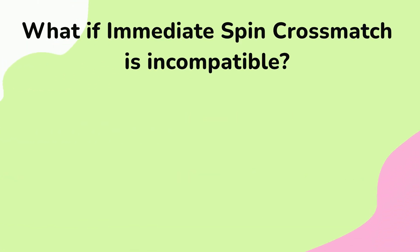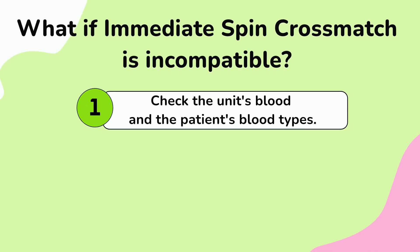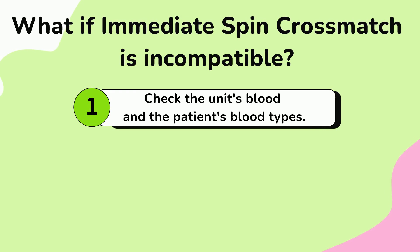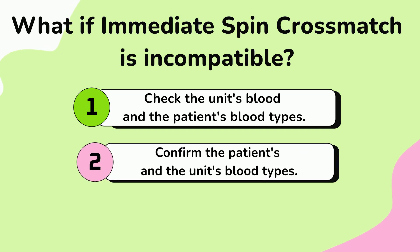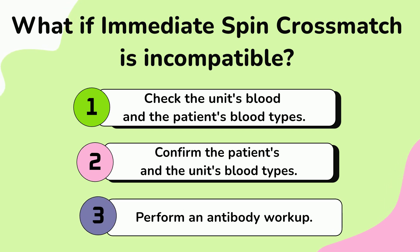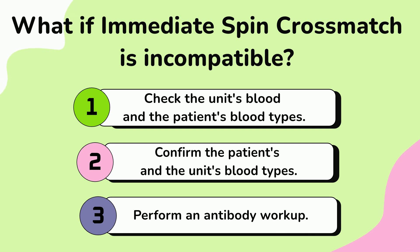What do I do if my crossmatch is incompatible on immediate spin? You will check the unit type and the patient type, making sure you are crossmatching the right patient and that the unit's blood type is compatible with the patient. If you got the wrong unit from the shelf, put it back, get the correct unit, and repeat the test. If the unit is correct, retype the patient sample you are using for the crossmatch. After confirming that the blood types for both donor and patient are correct, you may have to perform an antibody workup to further investigate, making sure that antibody is not the root cause of the incompatibility. Some reasons that an immediate spin would be incompatible are ABO incompatibility, cold antibodies, or rouleaux.